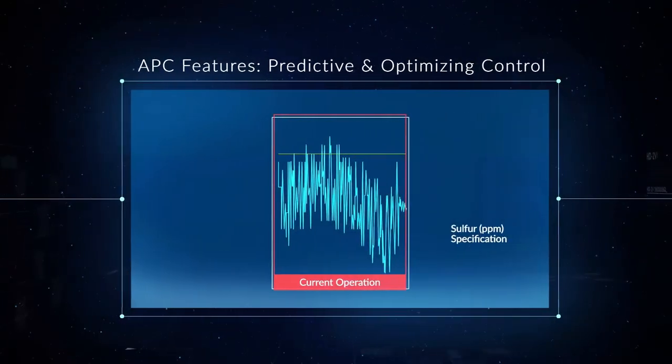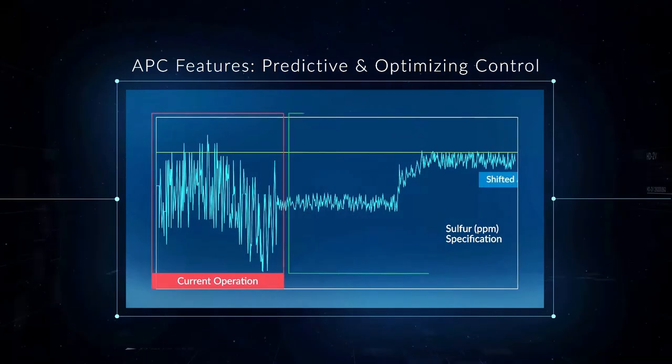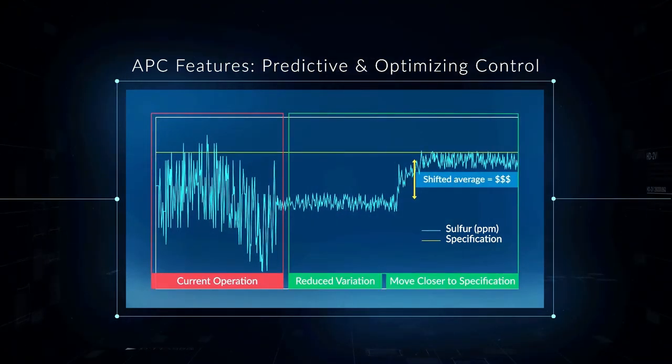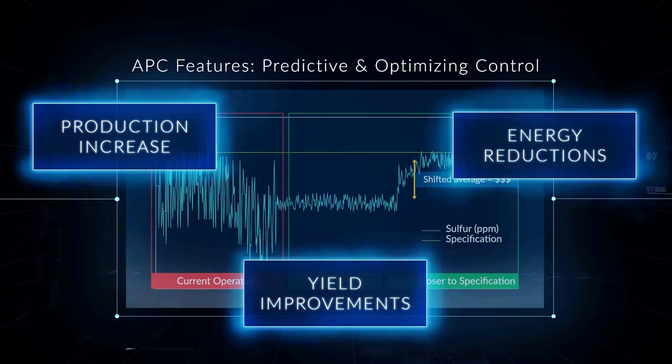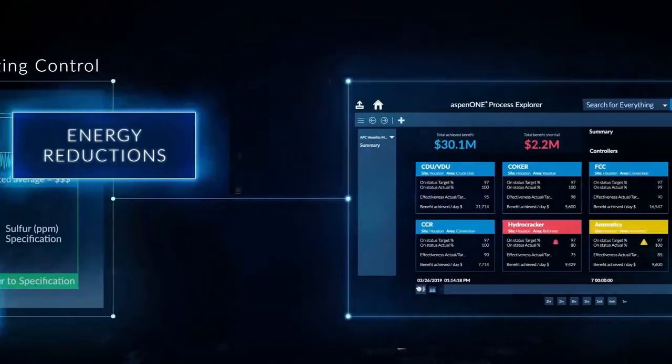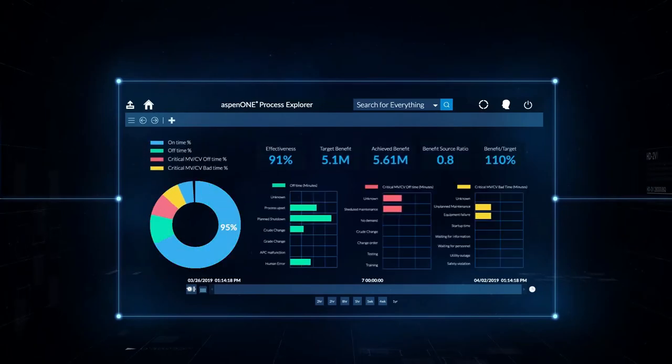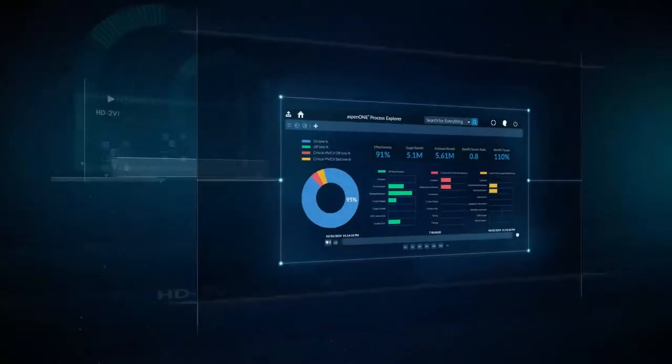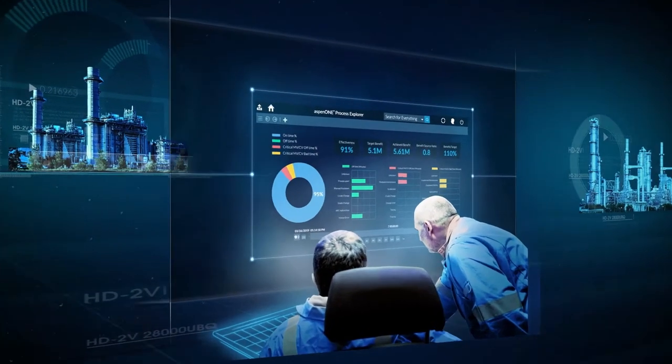With DMC3's patented technology, it is much easier to sustain and even expand APC benefits, resulting in a measurable reduction in energy costs and CO2 emissions while improving yield and production. Centralized performance monitoring shows these key performance indicators via dashboards at the enterprise, plant, or unit level, providing invaluable insights.